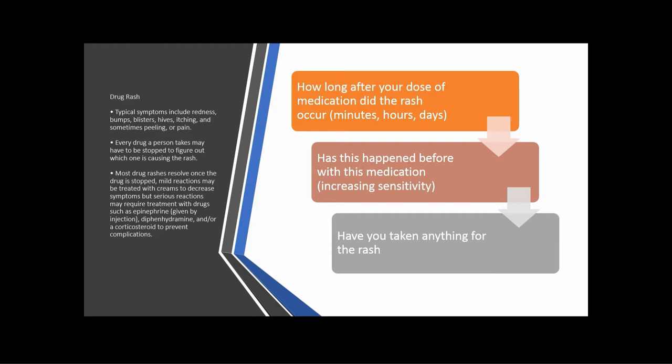Typical symptoms of drug rash include redness, bumps, blisters, hives, itching, and sometimes peeling or pain. Keep in mind, every drug a person takes may need to be stopped to figure out which one is causing the rash — and that's okay. The good thing about treating tuberculosis is that we do have time, and the most important thing is to make sure they're on the safest regimen possible so they're adherent. Most drug rashes will resolve once the drug is stopped. Mild reactions may be treated with creams, but serious reactions may require epinephrine by injection, Benadryl, or corticosteroids.